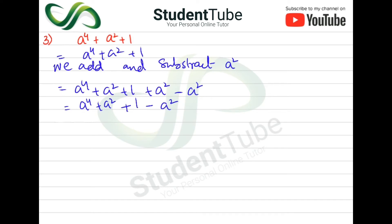We have a⁴ which is (a²)², plus 1 which is (1)². Then we have 2 times a² times 1, and we have plus and minus a².